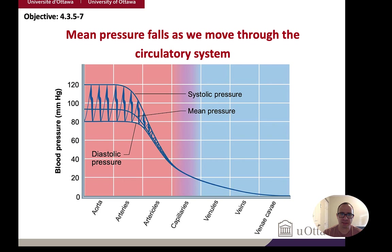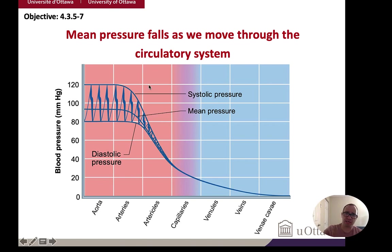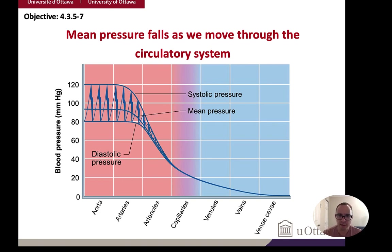There are two pressures to notice: systolic pressure when the heart is contracting, and diastolic pressure when the heart is relaxing. Systolic is 120 mmHg and diastolic is 80 mmHg — a good approximation of what exists in your body. When you go to the clinic and they say your blood pressure looks good at 120 over 80, that's what they're referring to: two measurements, systolic and diastolic pressure.